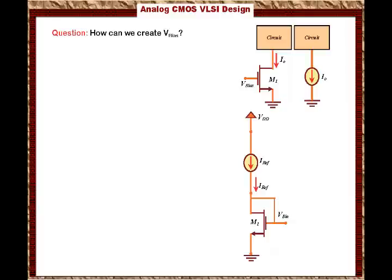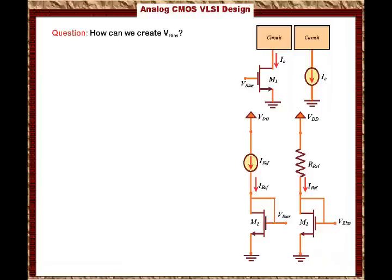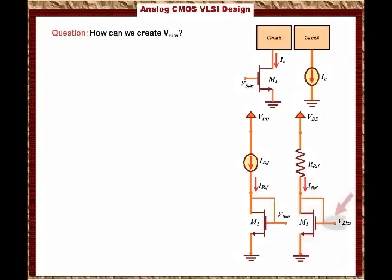The question now is how can we create IREF? Remember this circuit is about V_bias — how to create V_bias. To replace this current source, I add a resistor called R_reference. So what I have now is a voltage source connected to R_reference, which is connected to a diode-connected transistor. If I control the value of the transistor, I will be able to control the current going through it, and then I will be able to control V_bias. I change the transistor to change the current IREF such that I get the voltage I want, V_bias.